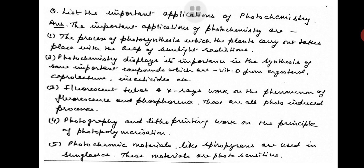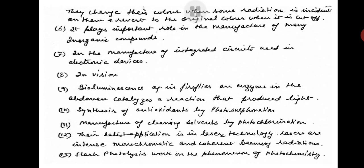Next application is photochromic materials like spiropyranes are used in sunglasses. These materials are photosensitive. They change their color when some radiation is incident on them and revert to the original color when it is cut off.